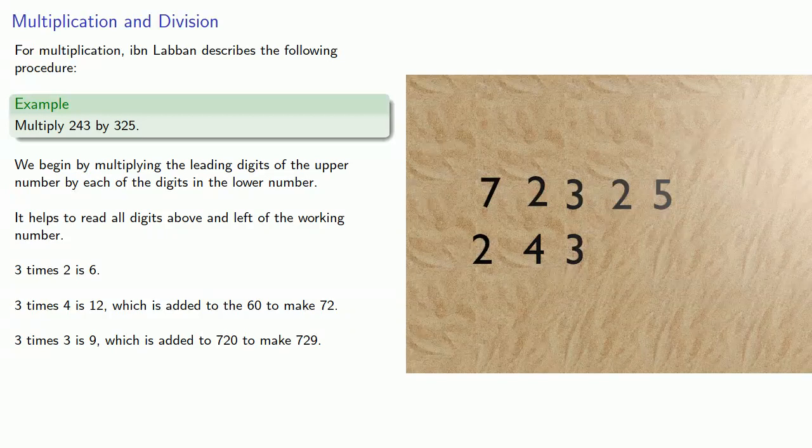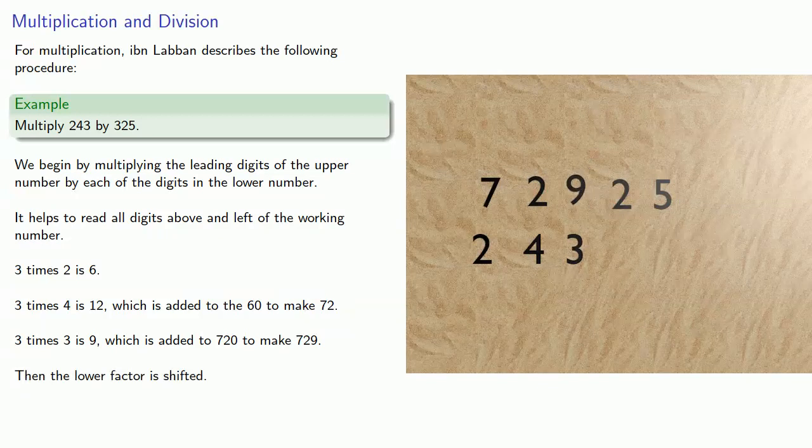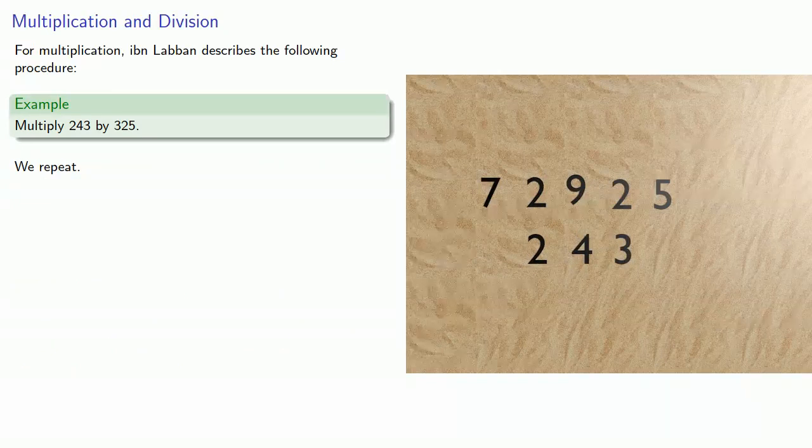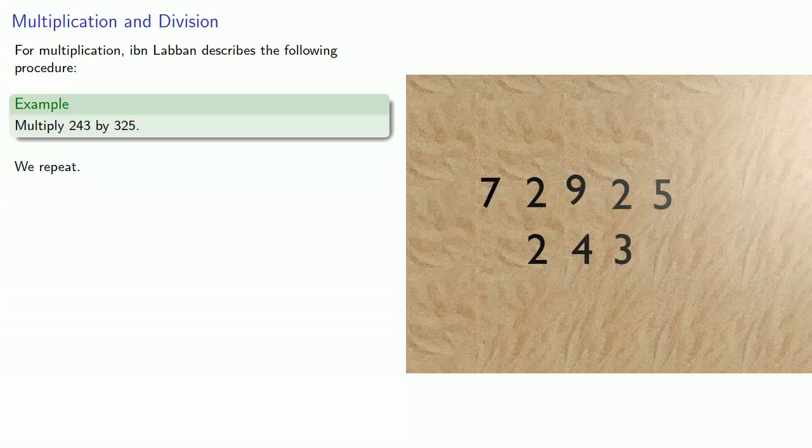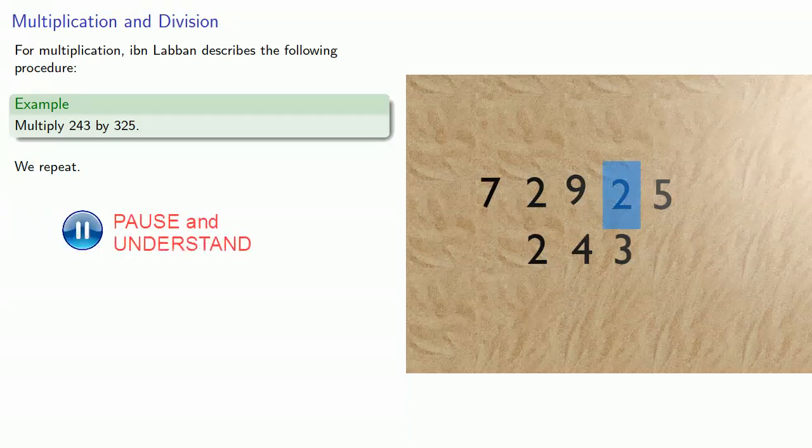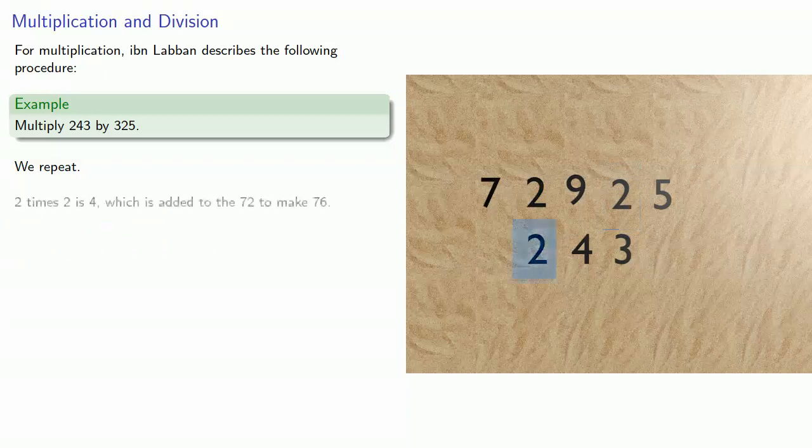But to continue with Ibn Laban's procedure, we multiply 3 by 3 to get 9, and add that to 720 to get 729. Then the lower factor is shifted. And we repeat the process. Since we've taken care of that first digit of the upper factor, our first digit is now 2.